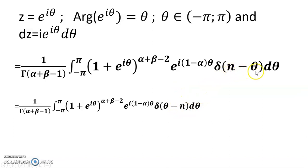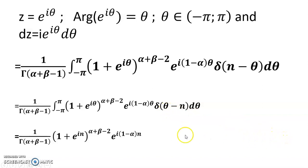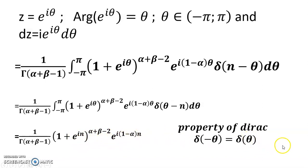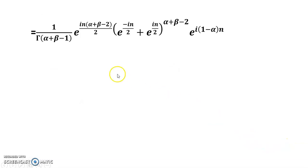We get 1 plus e to the power i theta, and delta(n minus theta) can be written as delta(theta minus n). Also, delta(minus t) equals delta(t), so applying this property, we get 1 plus e to the power in, and after applying this property, we get 1 over gamma(alpha plus beta minus 1) times e to the power in.